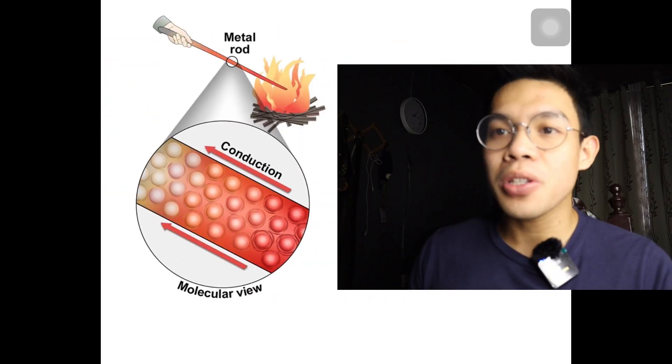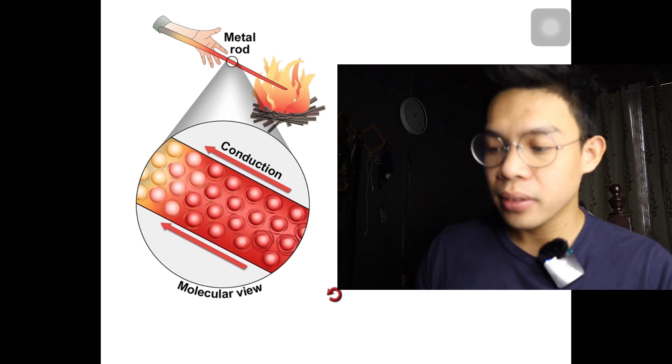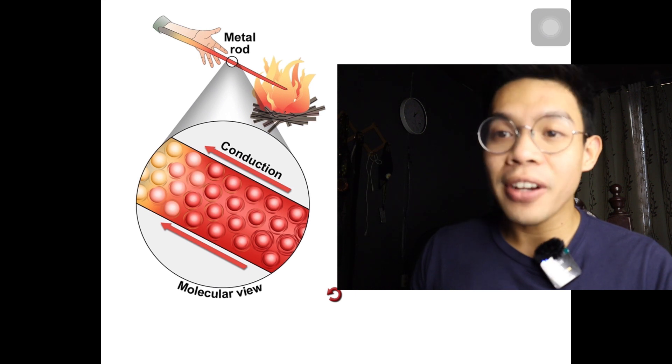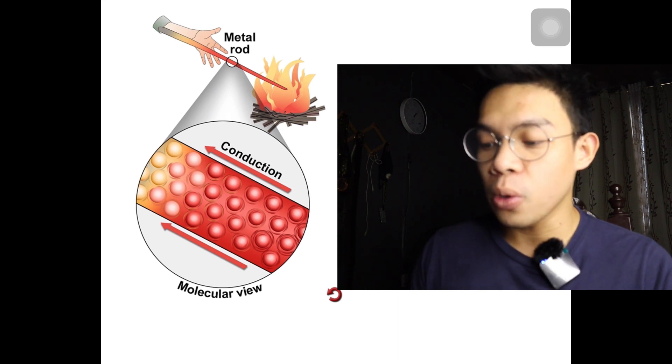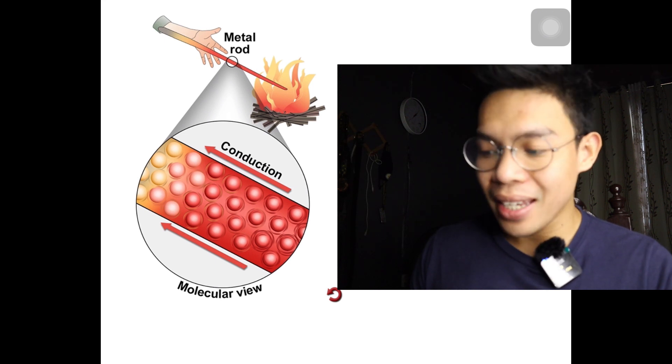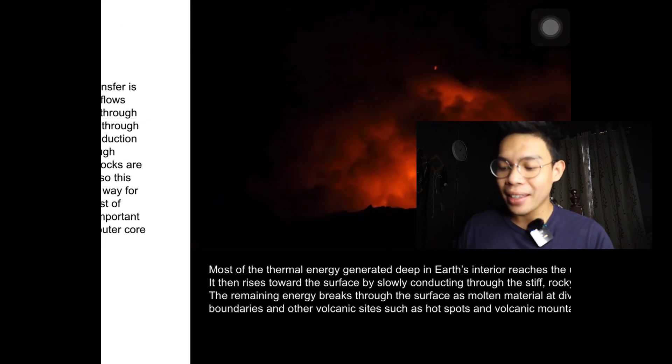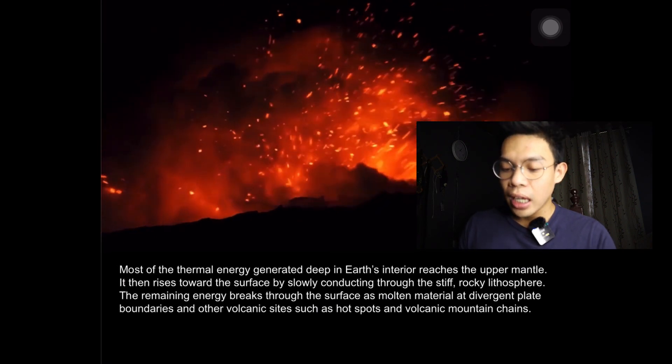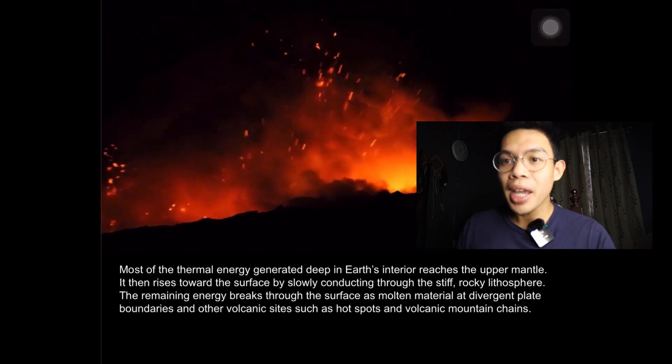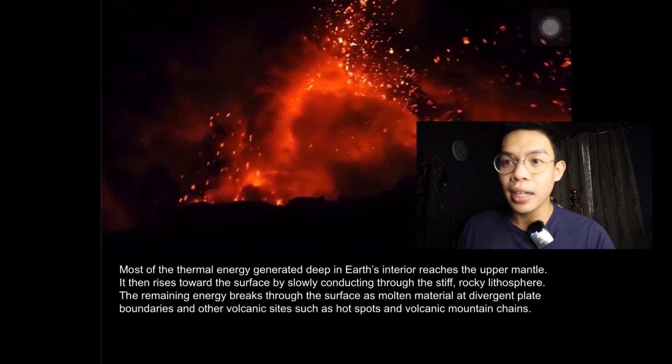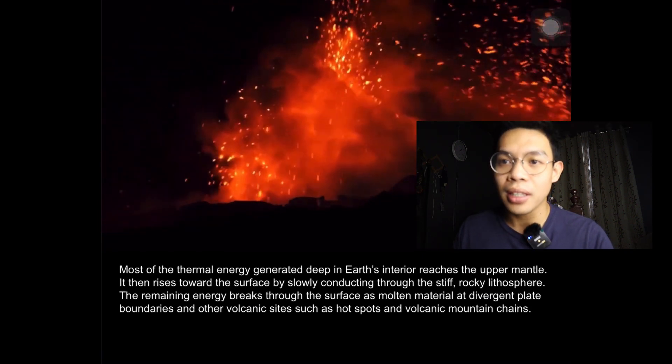The other type of heat transfer is conduction, where heat flows through a material either through the collision of atoms or through the flow of electrons. Conduction occurs more quickly through metals than rocks. Most rocks are poor conductors of heat, so this method is not an efficient way for heat to move through most of Earth. However, it is an important method in the inner and outer core and in the lithosphere. Most of the thermal energy generated deep in Earth's interior reaches the upper mantle. It then rises and powers the surface by slowly conducting through the stiff, rocky lithosphere. The remaining energy breaks through the surface as molten material at divergent plate boundaries and other volcanic sites such as hotspots and volcanic mountain chains.